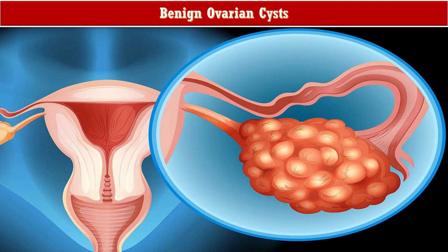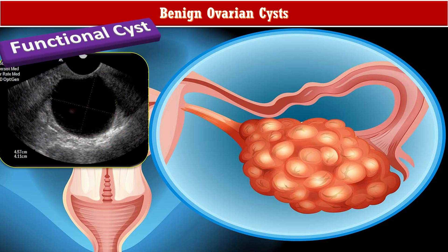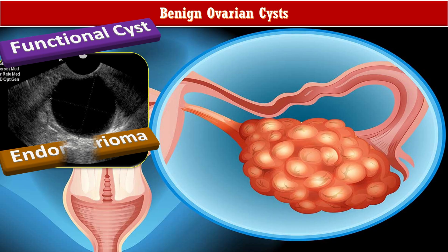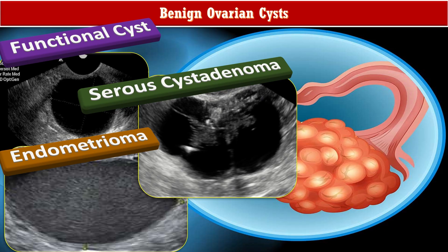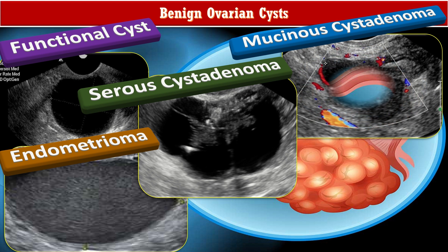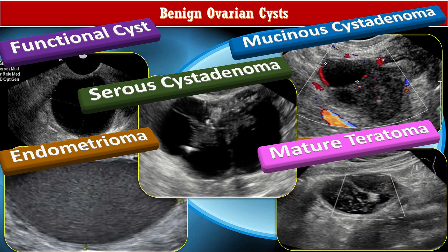Among benign ovarian masses: functional cysts are thin-walled unilocular cysts with acoustic enhancement and absence of internal echoes. Endometriomas are similarly thin-walled unilocular cysts with acoustic enhancement and absent internal echoes. Serous cyst adenomas are unilocular or multilocular cysts filled with clear watery fluid. In mucinous cyst adenomas, individual locules may vary in imaging appearance due to differences in hemorrhage and protein content. Mature teratomas appear as densely echogenic protuberances projecting into the cystic mass.